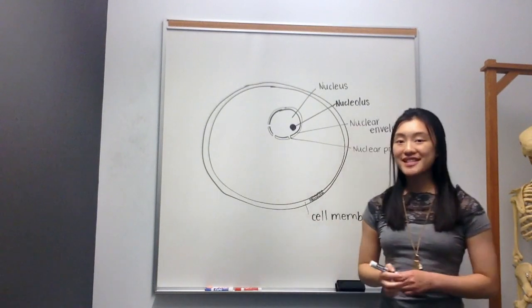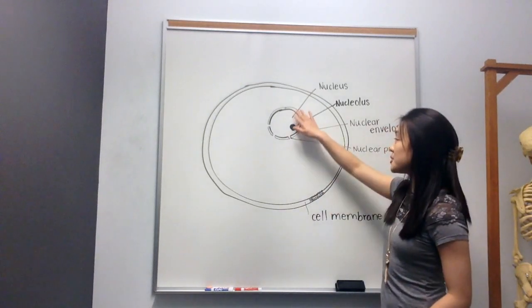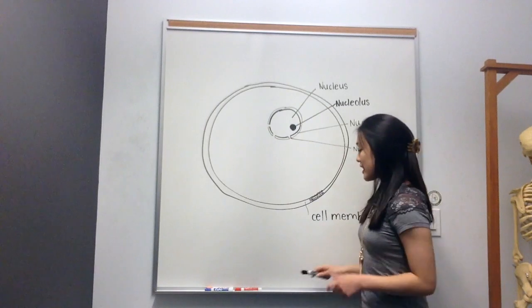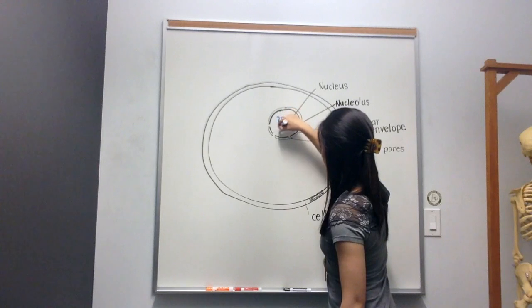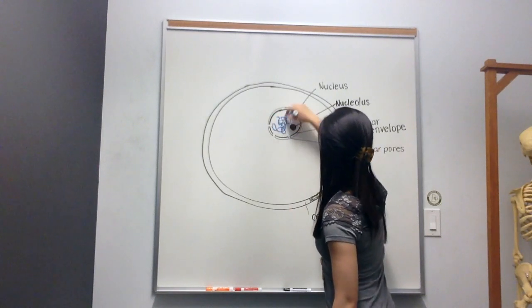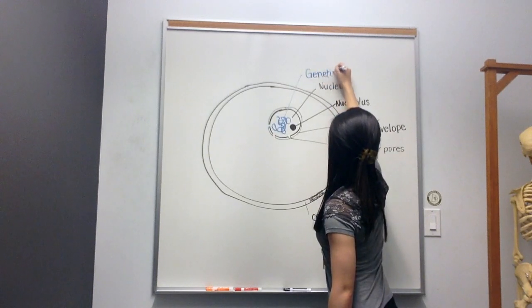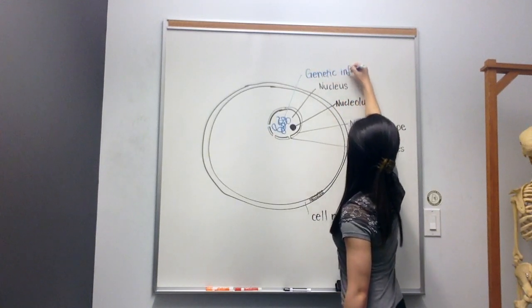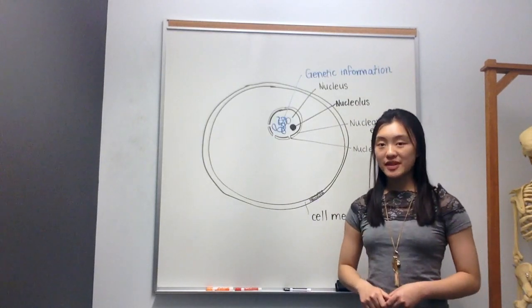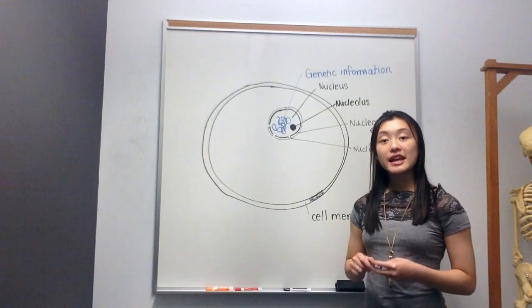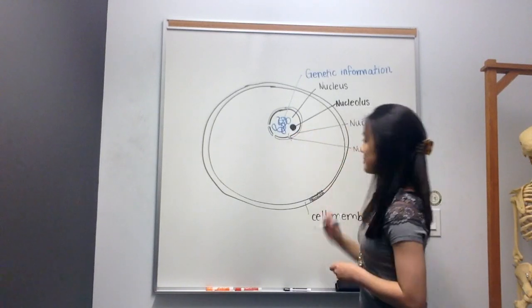These nuclear pores allow genetic information in the form of RNA to leave the nucleus. So I'll actually draw some of that in here. We'll draw some DNA or we'll just draw some genetic information. And then I'll just write that down as genetic information. So the genetic information lies within the nucleus. And it can only leave when it is in the form of RNA. Like so, leaving through a nuclear pore.